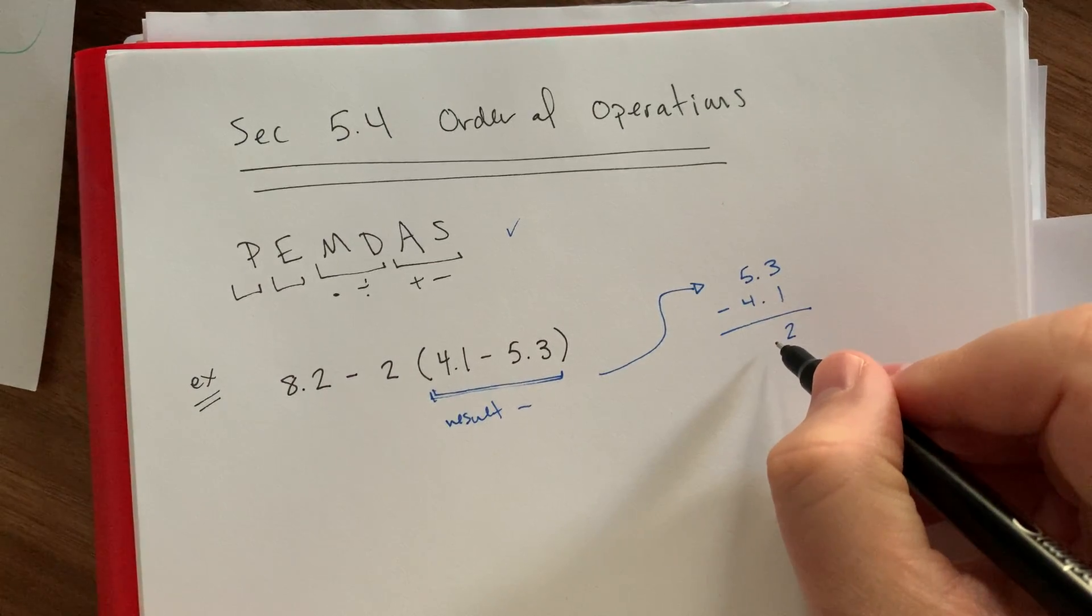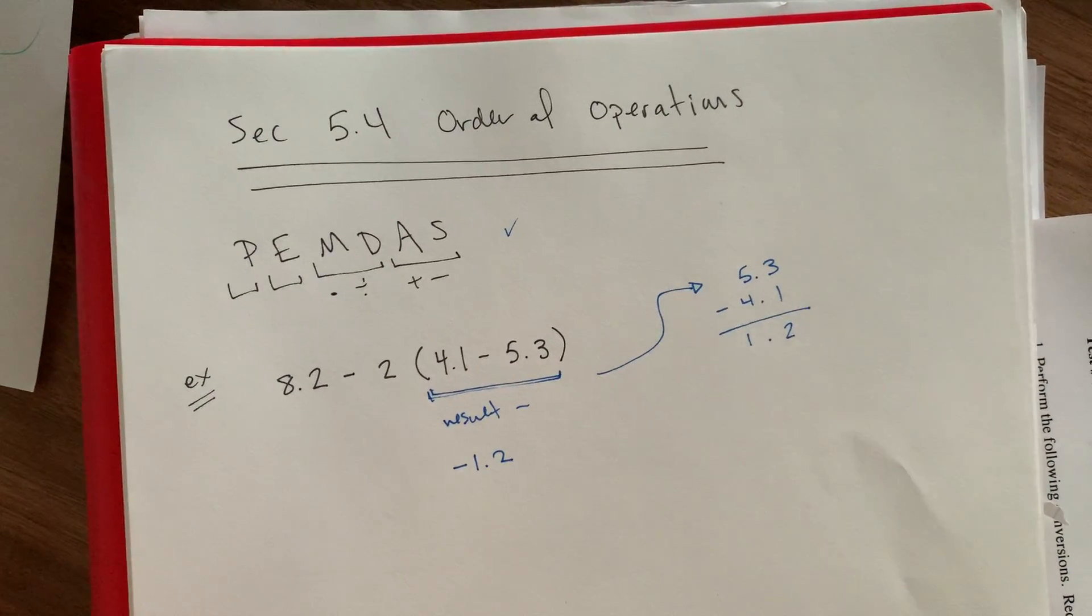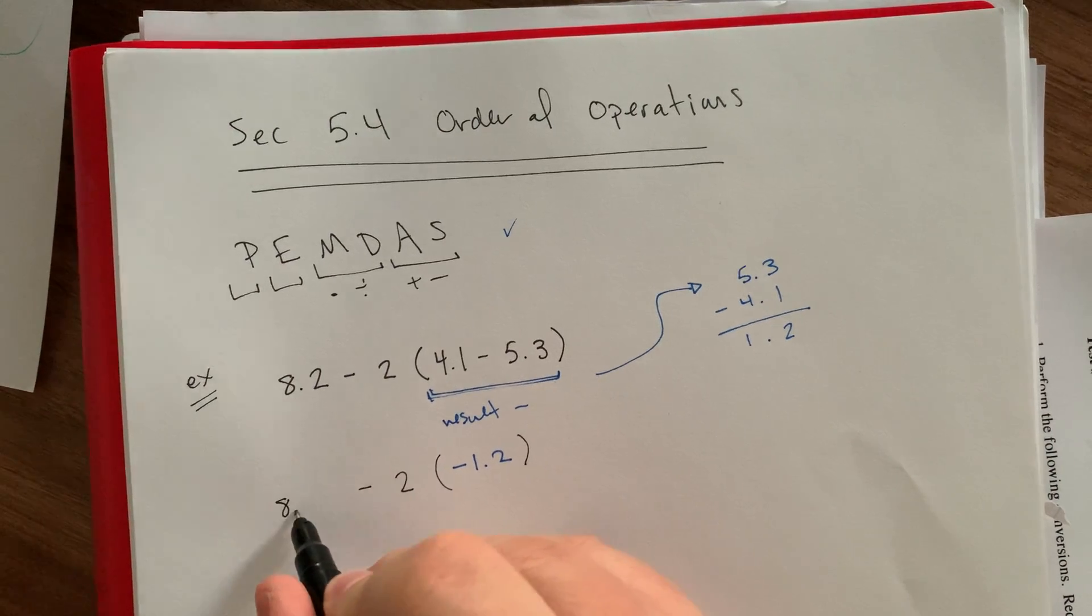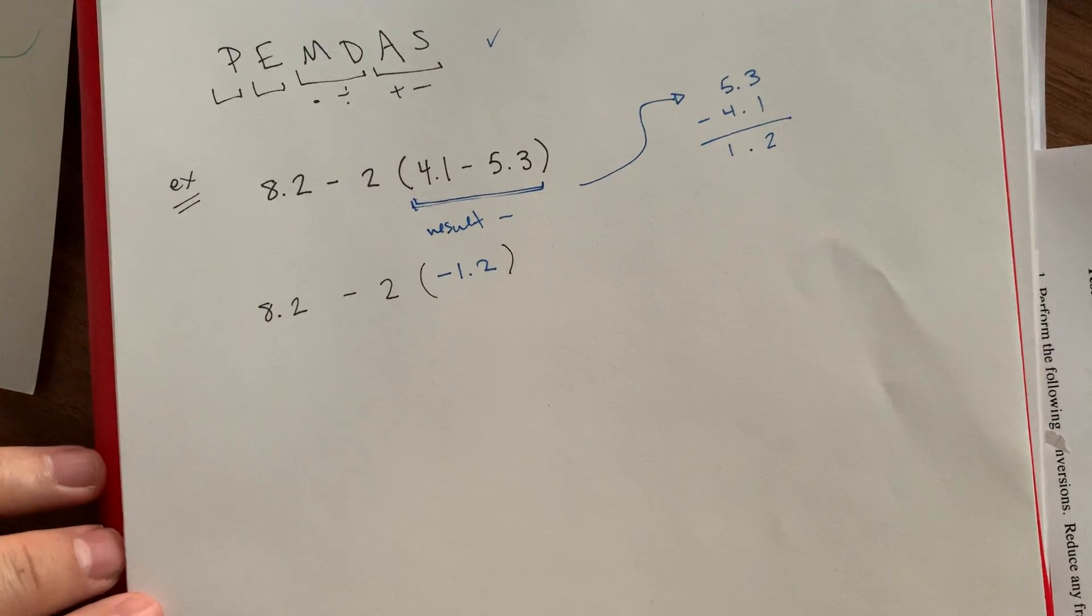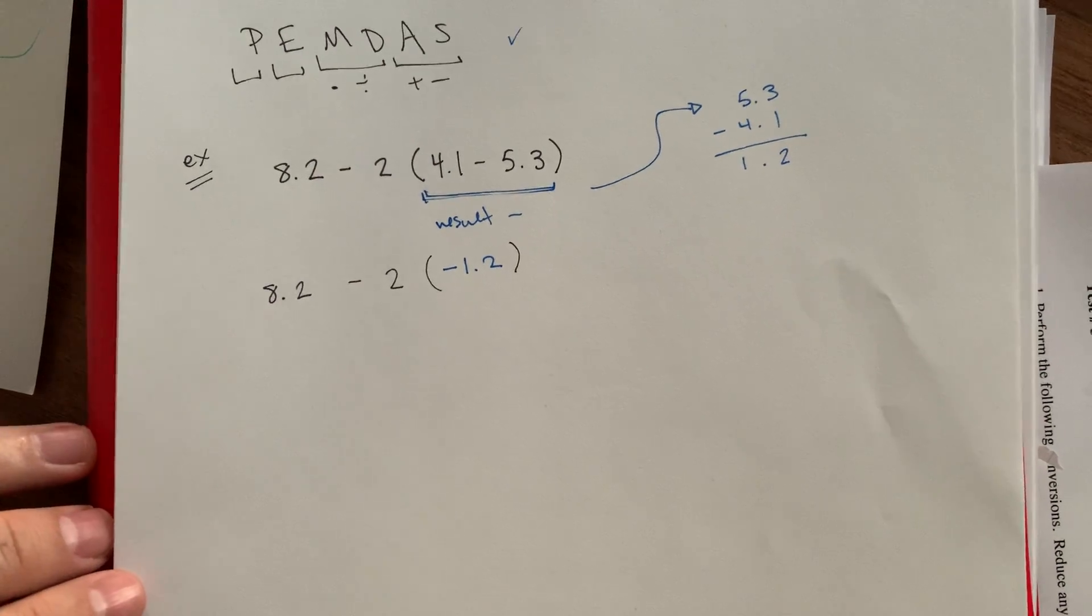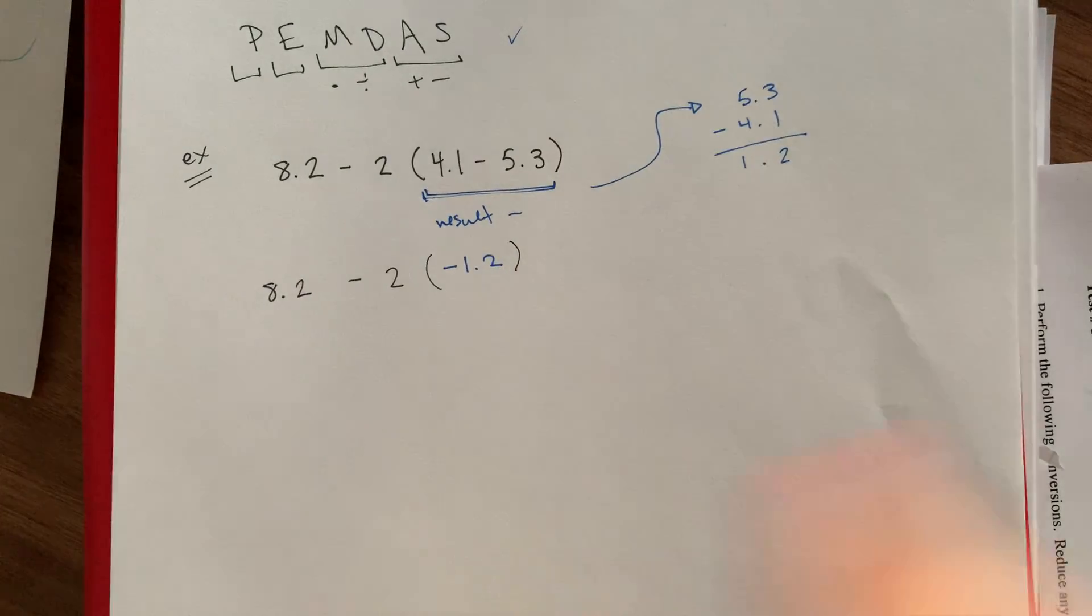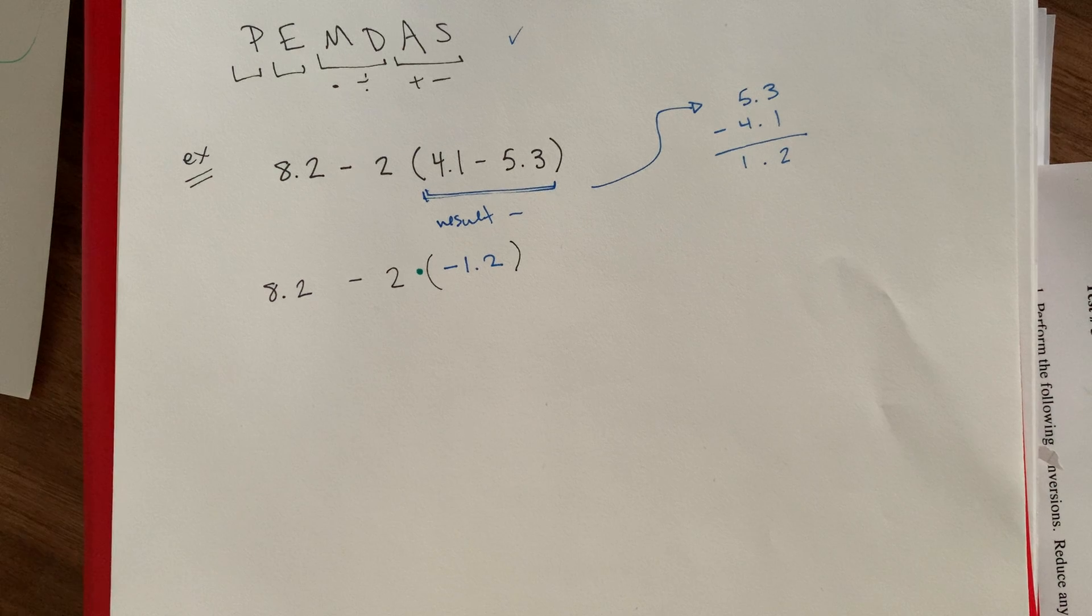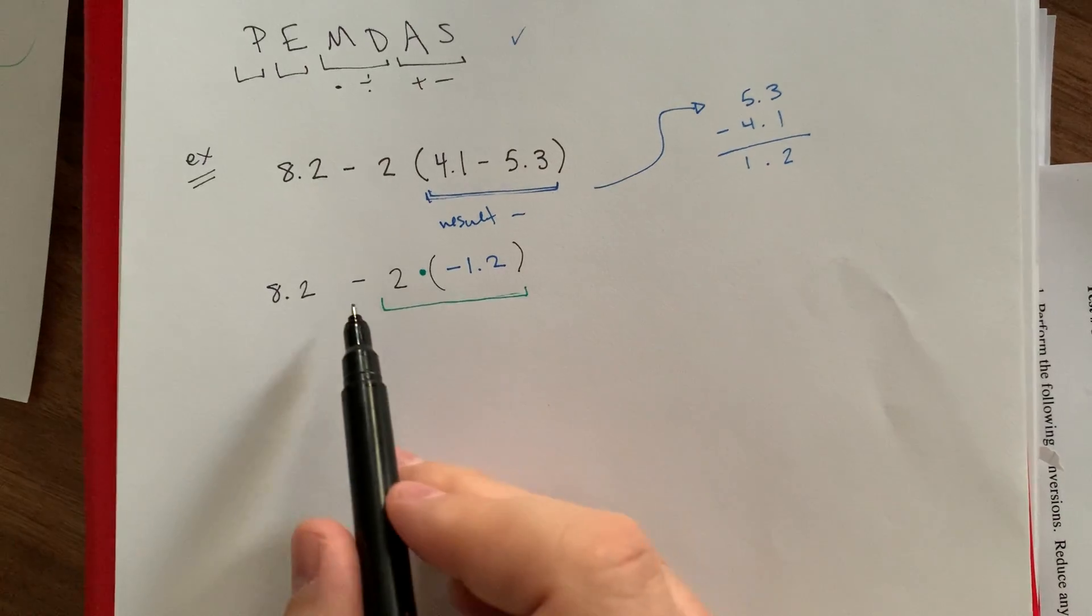To actually do this subtraction, it's going to be the 5.3 minus the 4.1, but then the result is negative. So the 3 minus 1 is 2, decimal comes down, 5 minus 4 is 1. So this is negative 1.2 in our parentheses. The classic mistake, the mistake that I see most often whenever students are doing order of operations type problems, everybody wants to do 8.2 minus 2 before you multiply. But remember, this parentheses means multiplication. You have to do all your multiplication stuff, provided there's not parentheses telling you otherwise, before we do any subtractions.